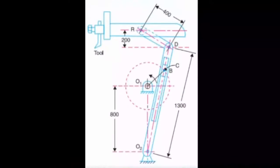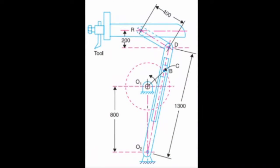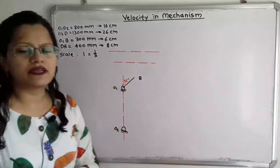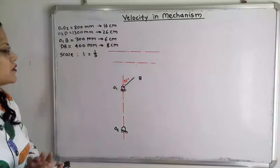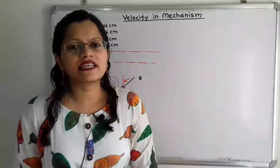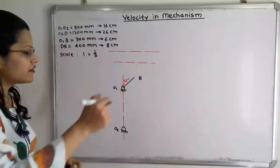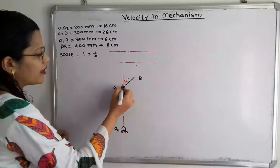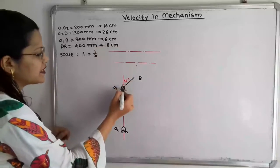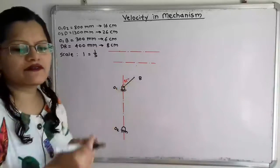Now we will observe the diagram. The two fixed points O1 and O2 lie along a vertical line, so first we will draw one vertical dash-dot line and plot O1 and O2 at 16 cm apart. The crank O1-B is inclined at 45 degrees from vertical. So we will draw a 45 degree angle and from that point draw crank O1-B. O1-B is 300 mm, so as per scale we take 6 cm. So we plot O1-B equal to 6 cm.